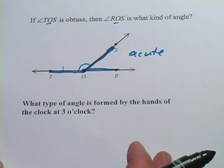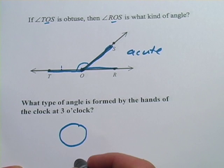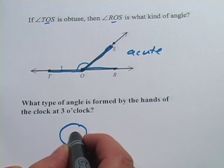All right, last problem. What type of angle is formed by the hands of the clock at 3 o'clock? So I think I'll just draw a picture here. At 3 o'clock,